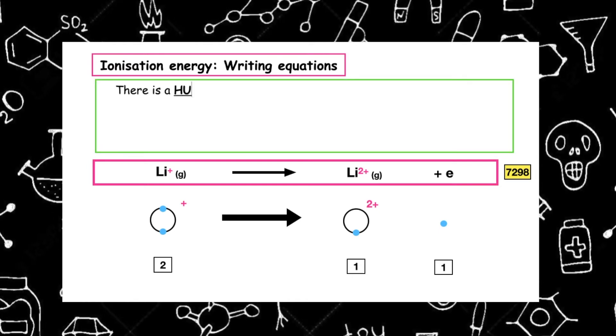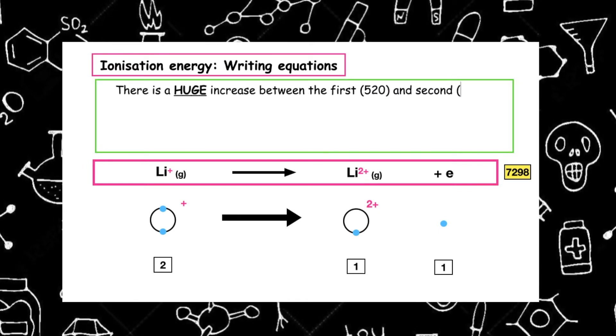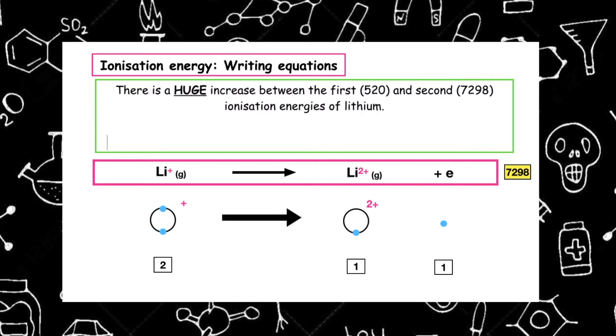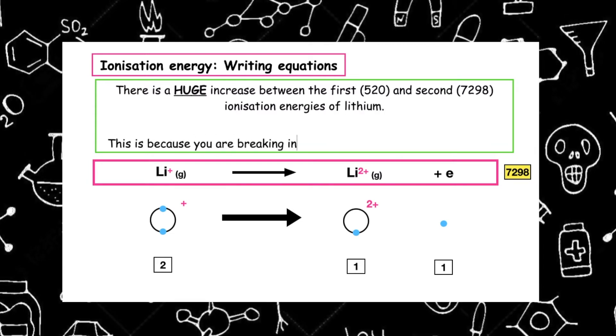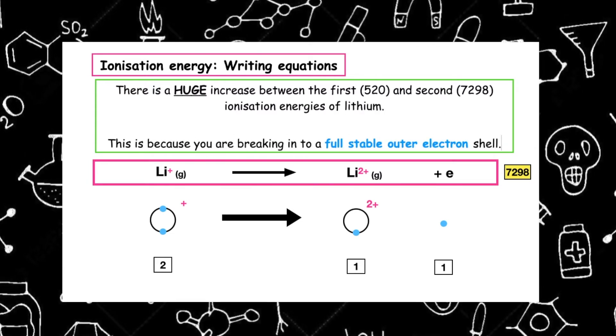There is a huge increase between the first and second ionization energies for lithium, and this is because you are breaking into a full stable outer electron shell.